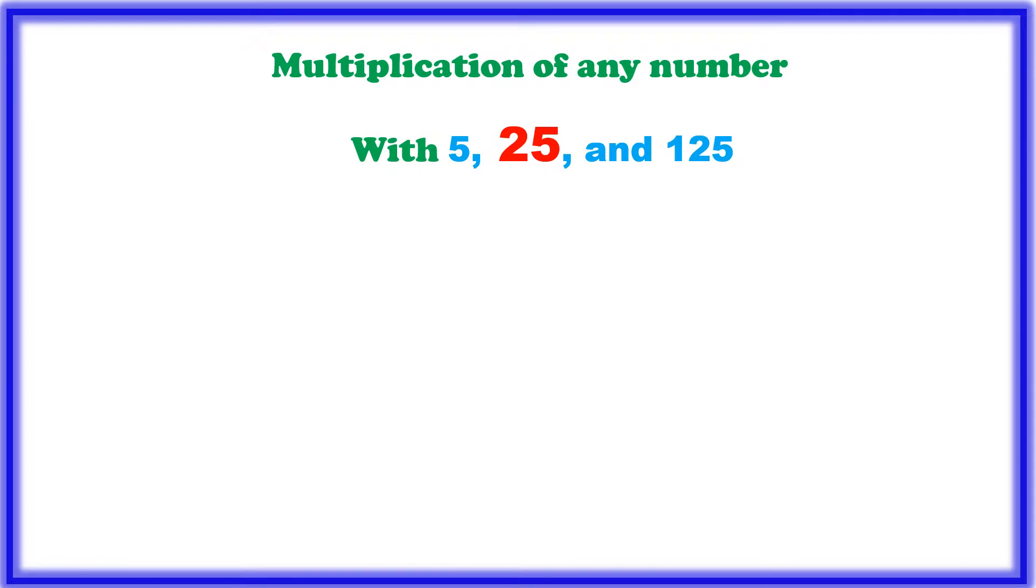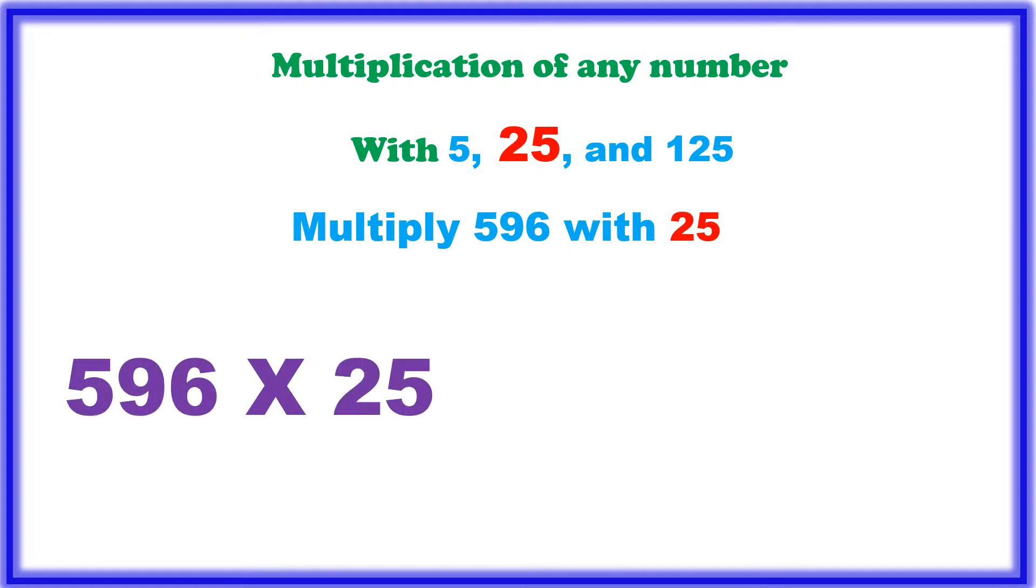Multiplication of any number with 25, we will solve with 25. Then 25 is nothing but 5 into 5, if you multiply two 5s, 5 into 5 is equal to 25. 5 in the earlier side, we learnt that 5 is nothing but 10 by 2, that is 10 by 2, 10 by 2. 10 into 10 is equal to 100, 2 into 2 is equal to 4, 100 by 4.